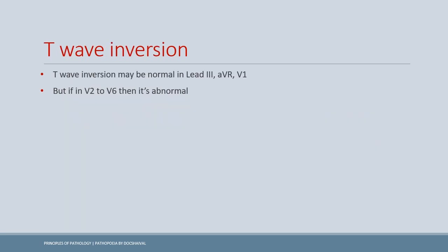T wave inversion is seen in ischemia and therefore in both the hyperacute phase and fully evolved phase of myocardial infarction. An important point: T wave inversion can also be normal in the general population — specifically in leads III, aVR, and V1. However, if T wave inversion is present in V2, V3, V4, V5, or V6, it is obviously abnormal and suggestive of MI.